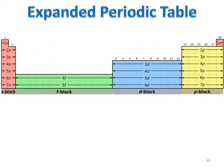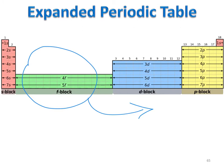This is the expanded periodic table — what the periodic table would look like if everything were arranged according to orbital filling order with all the different blocks in their appropriate places. It gets very large and extensive. For that reason, we pull the F block out and insert it underneath the D block, just for convenience.